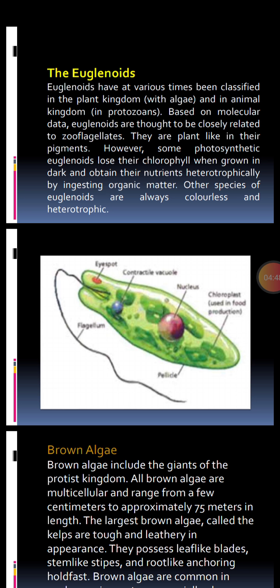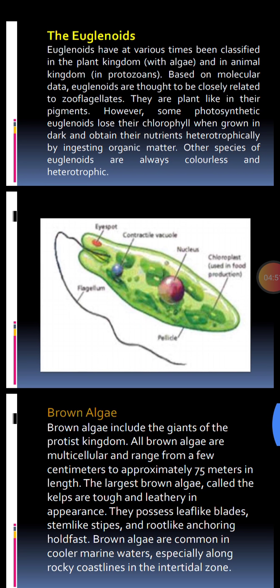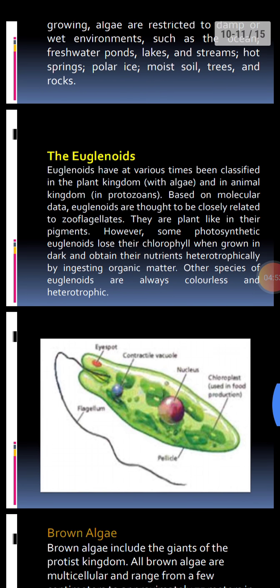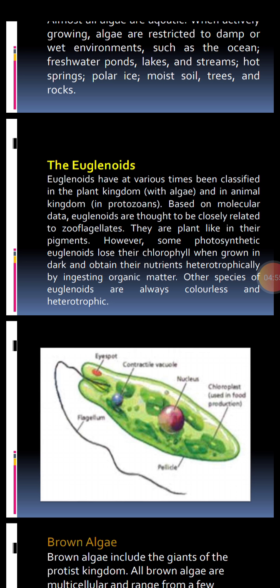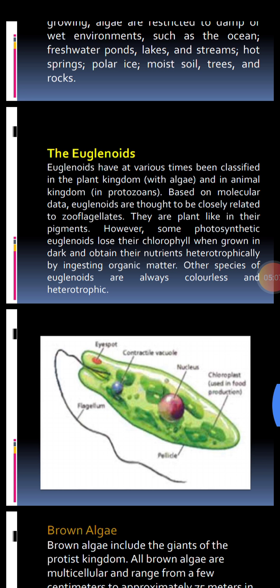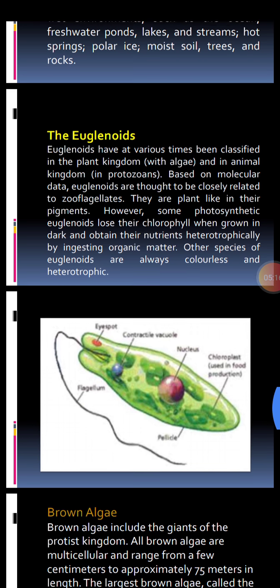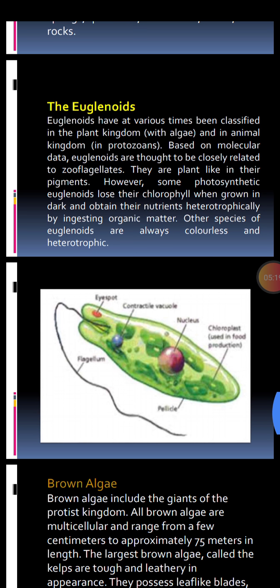Euglenoids are plant-like in their pigments. However, some photosynthetic euglenoids lose their chlorophyll when placed or grown in the dark, and obtain their nutrients heterotrophically by ingesting organic matter from their surroundings — meaning they are not able to make their own food. Only in the presence of light are they able to photosynthesize. Other species of euglenoids are always colorless and heterotrophic — they lack pigments and cannot make their own food.